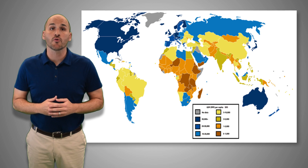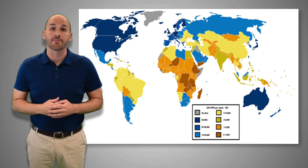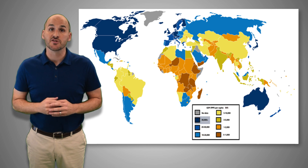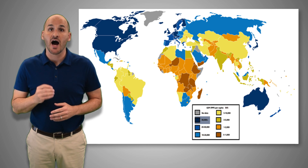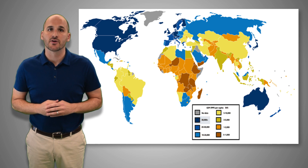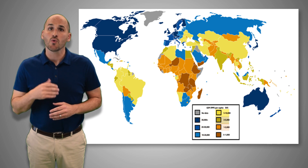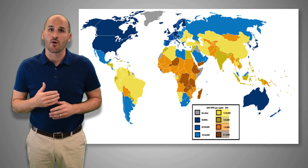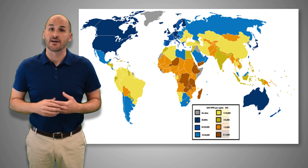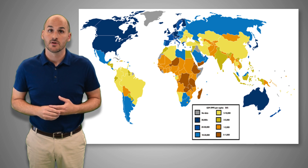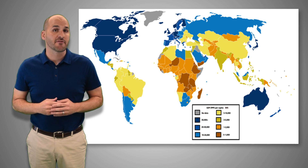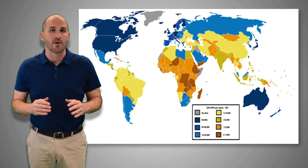This map shows us the real GDP per capita of each country around the world. Countries in dark blue have the highest real GDP per capita and, therefore, the highest standard of living. Countries in yellow, orange, and brown have lower real GDP per capita and, therefore, lower standards of living. As you can see, real GDP per capita varies greatly around the world.